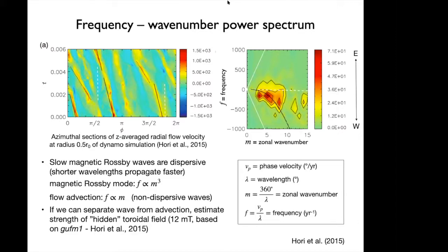To identify magnetic Rossby waves, they used frequency-wavenumber power spectra, with frequency on the y-axis and wavenumber on the x-axis. Wavenumber can be thought of as how many wavelengths fit around the core: M=1 is 360 degrees, M=10 is 36 degrees. These plots isolate magnetic Rossby waves because they're dispersive — shorter wavelengths propagate faster, following a cubic relationship. Advection by contrast gives a linear, non-dispersive relationship. By examining the westward drift signal in these plots, we can separate wave propagation from background flow.